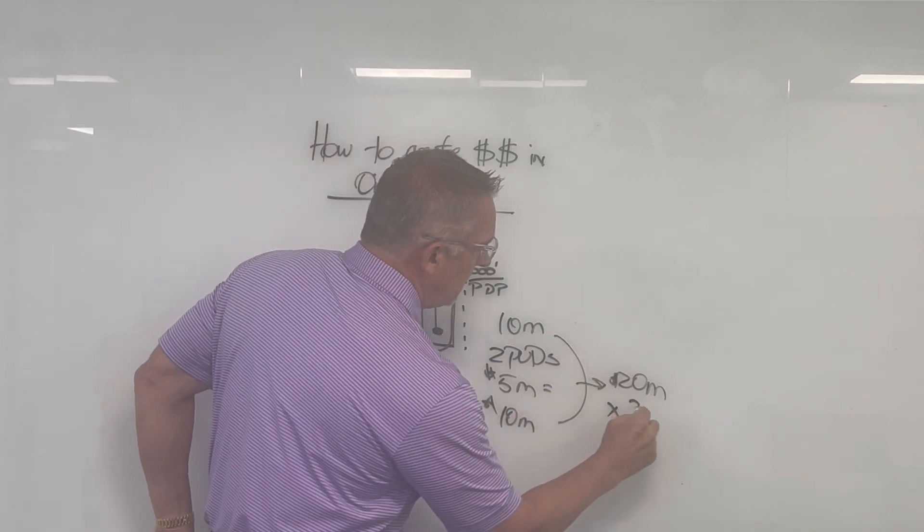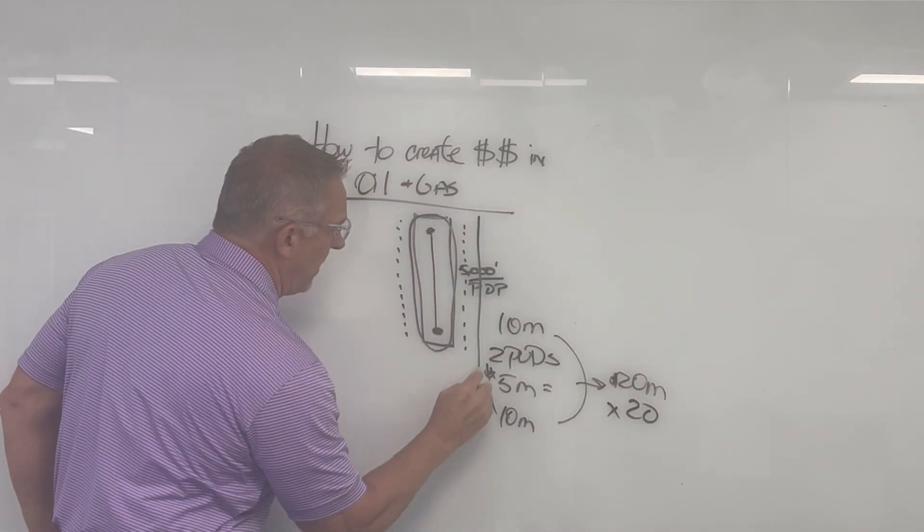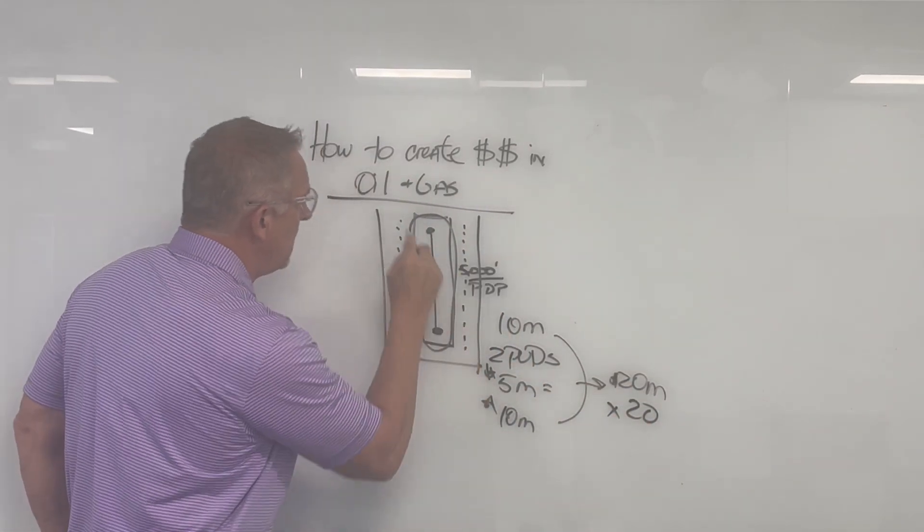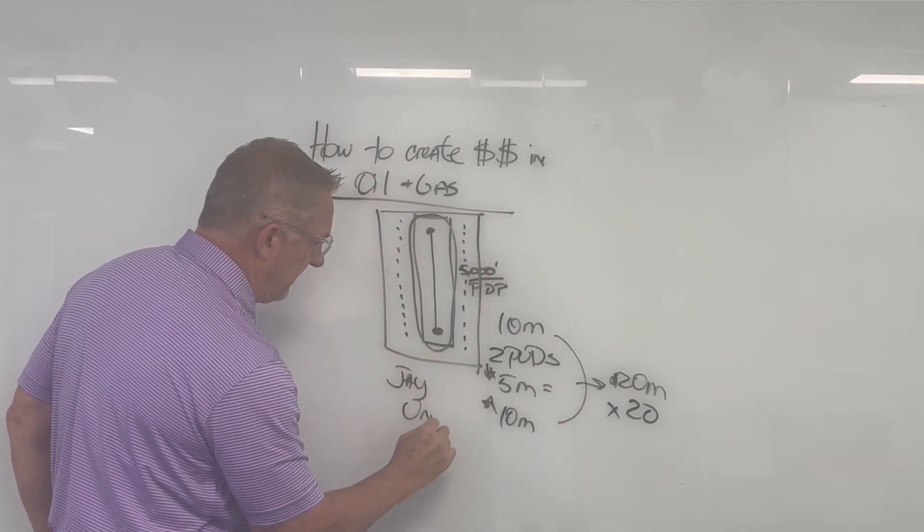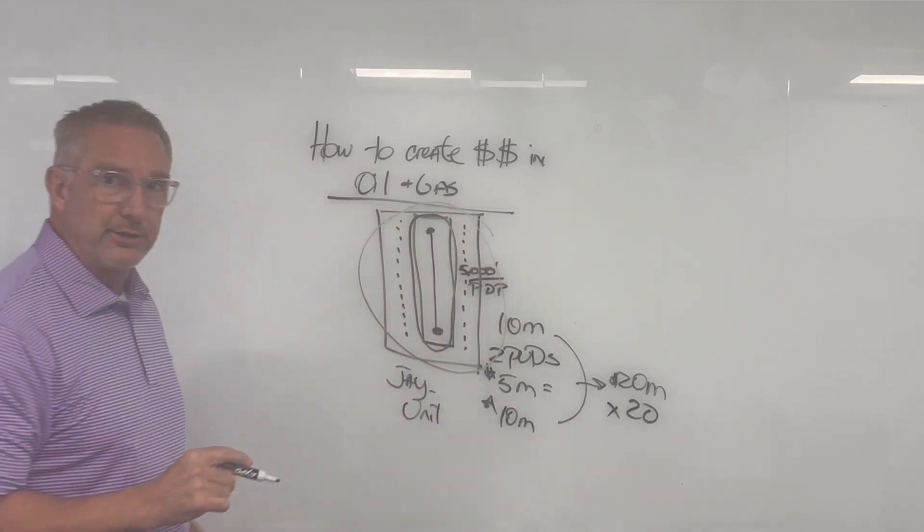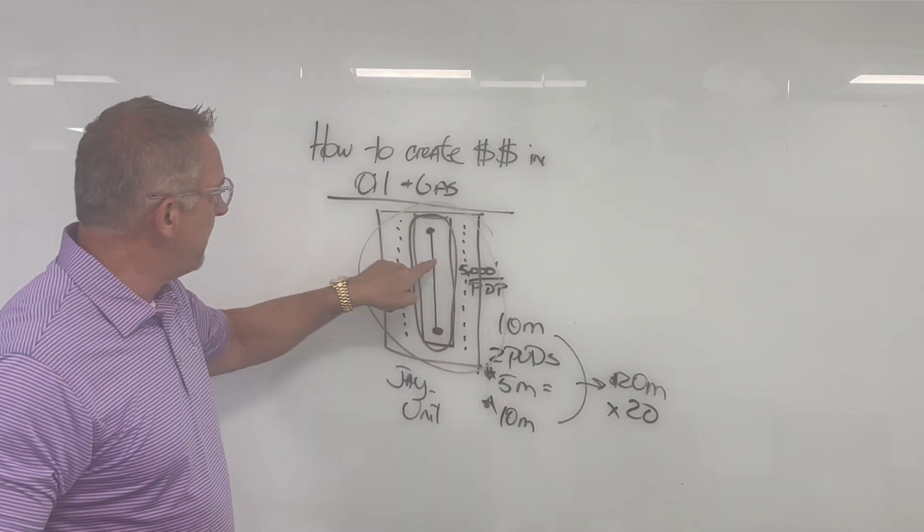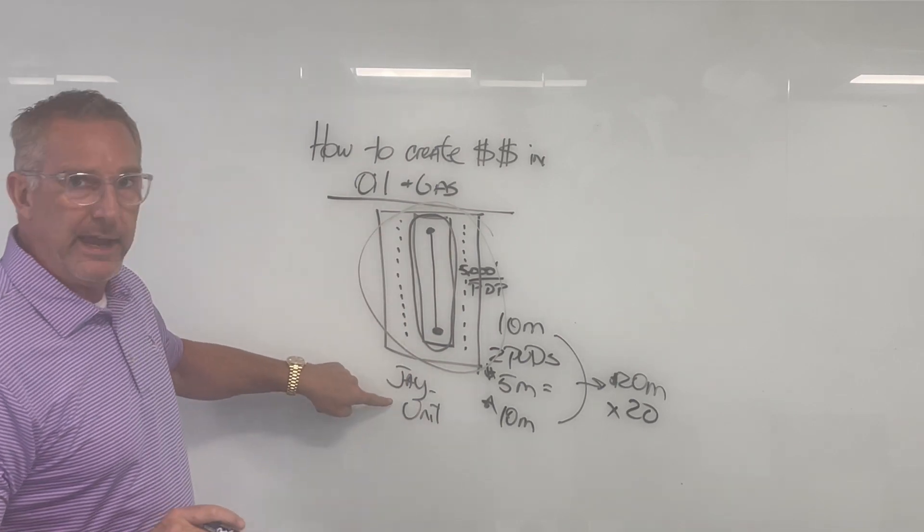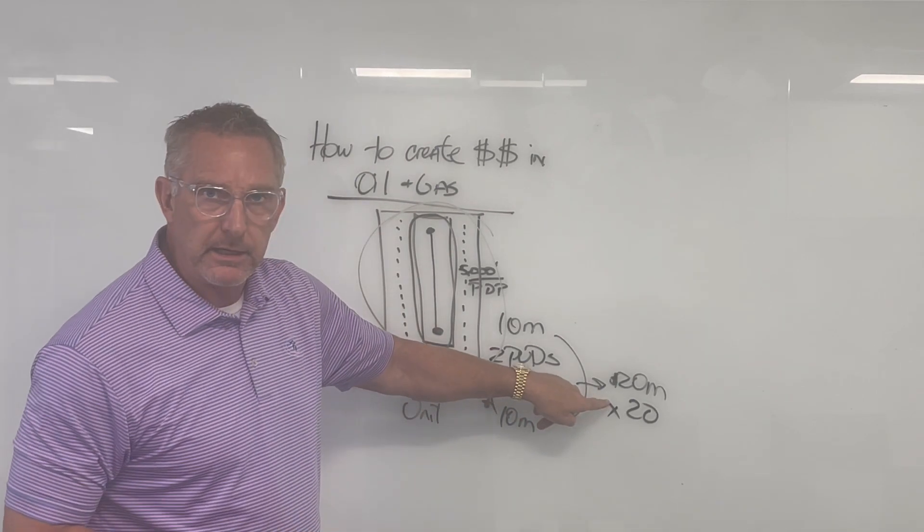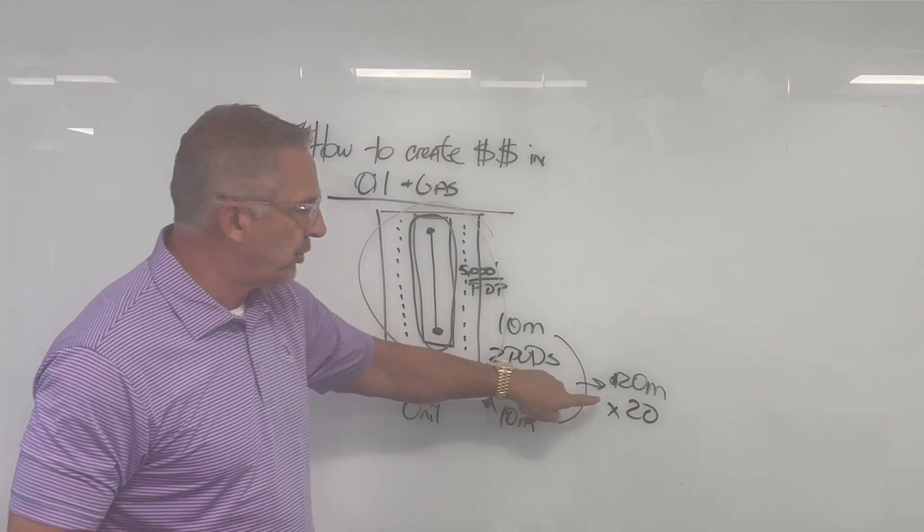So let's say I call this a J unit. Yep, that's right. This right here is called the J unit. It's a PDP well, one PDP well and two PUDs. That's a J unit. That's worth $20 million. One J unit is worth $20 million.